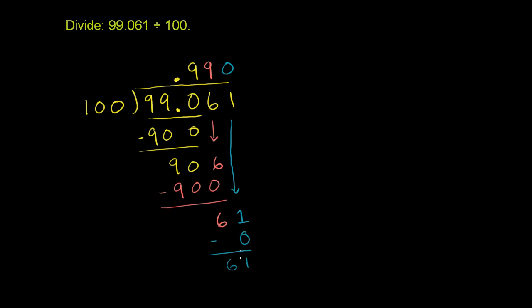And the best way to keep dividing is to remember that this has as many trailing 0's on it as you want. They're not really changing the number. So we can throw a bunch of 0's to the right of here. As many as we need. So let's throw a 0 right now. Bring it down. Let's throw that 0. Bring it down.